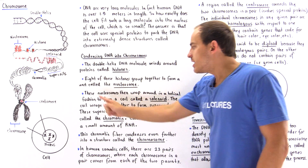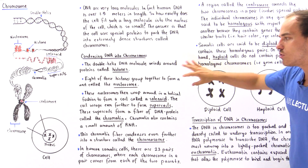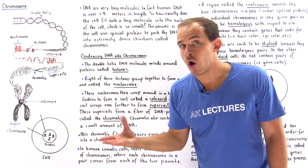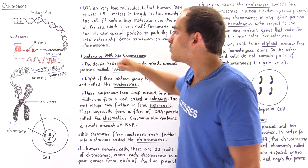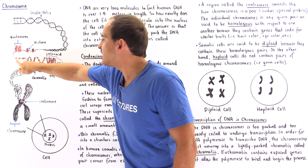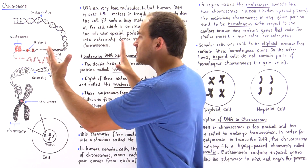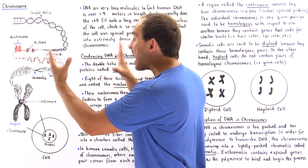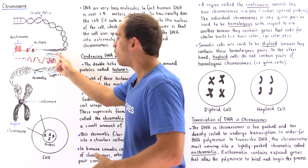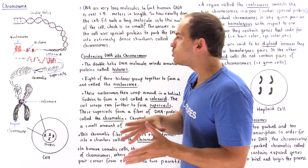What happens next is these nucleosomes then wrap around in a helical fashion to form a coil known as the solenoid. We take these individual nucleosomes and pack them together in a helical fashion to form our coils known as the solenoid.